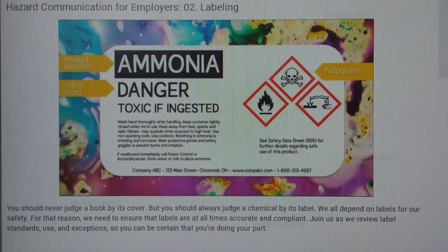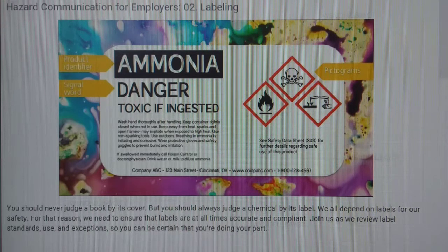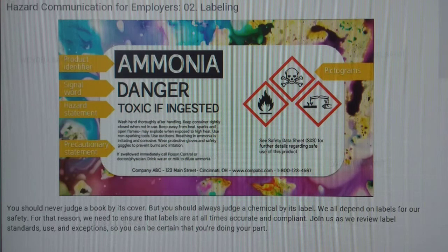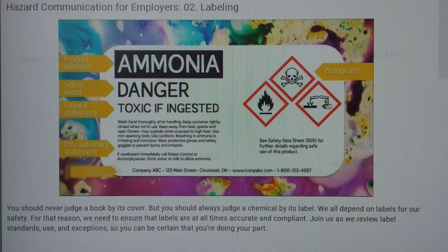Third, every label must include a signal word — either 'danger' if the hazard is severe, or 'warning' if it's less severe. Hazard statements are also required; these communicate the kind of hazard associated with the chemical and potentially some indication of the degree of hazard. Each label must also have a precautionary statement, which gives more detail about how people can mitigate the risk or minimize adverse effects by handling or storing the chemical properly. Finally, every label should also list the name, address, and phone number of the party responsible for the chemical.